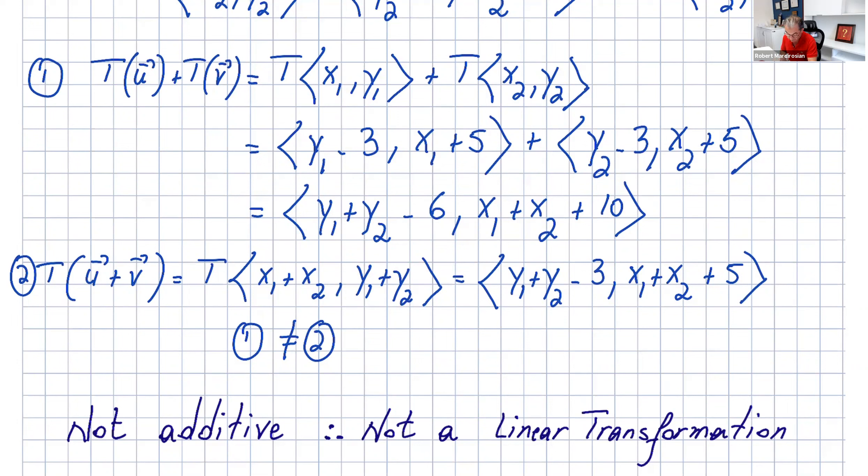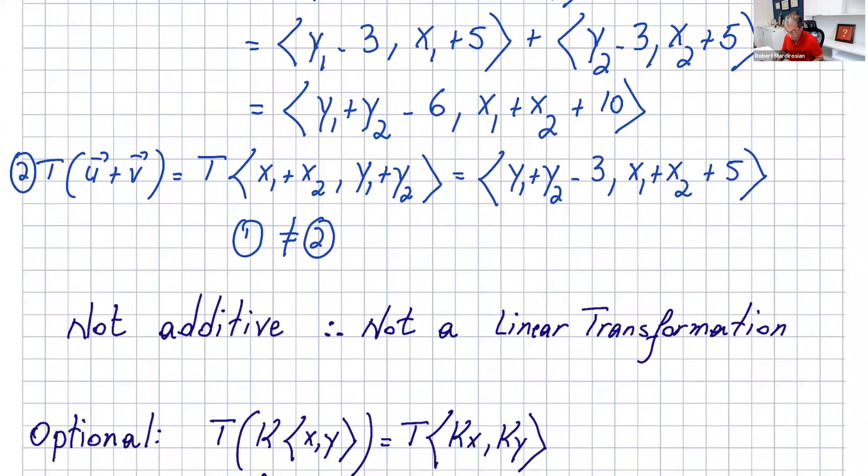As you see, number one is not equal to number two. This should have been -3 and +5. So if they're not equal, it's not additive, so not a linear transformation. You can stop right here, but the next step is optional.